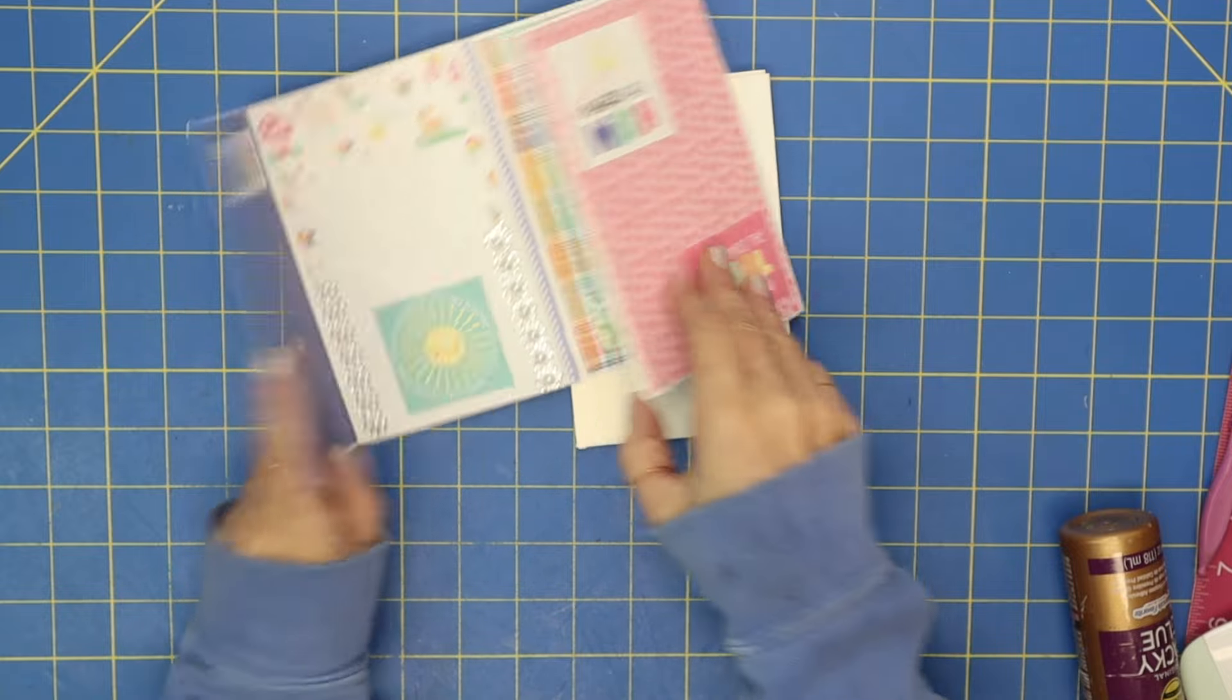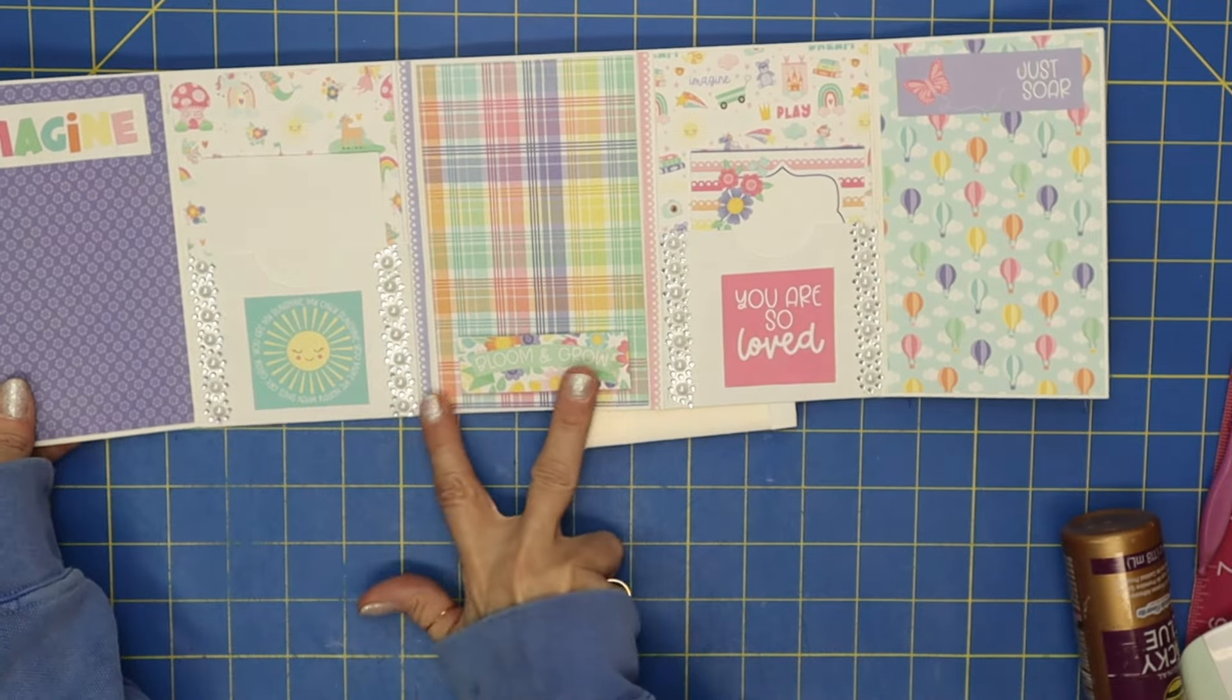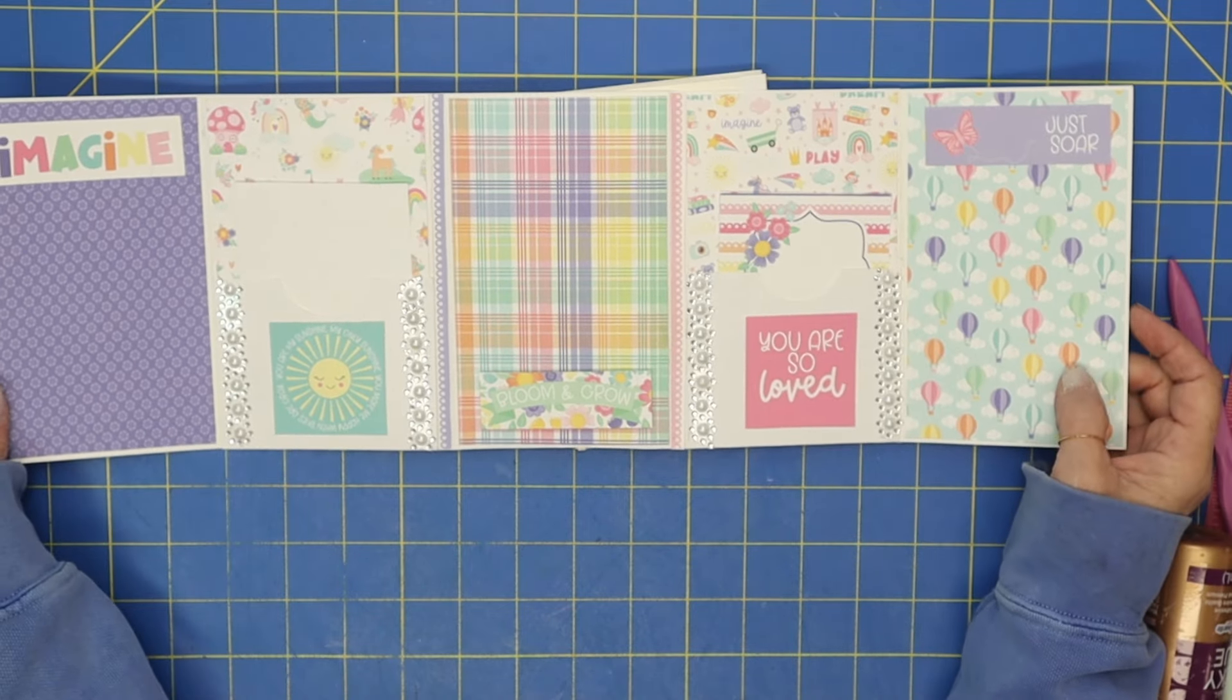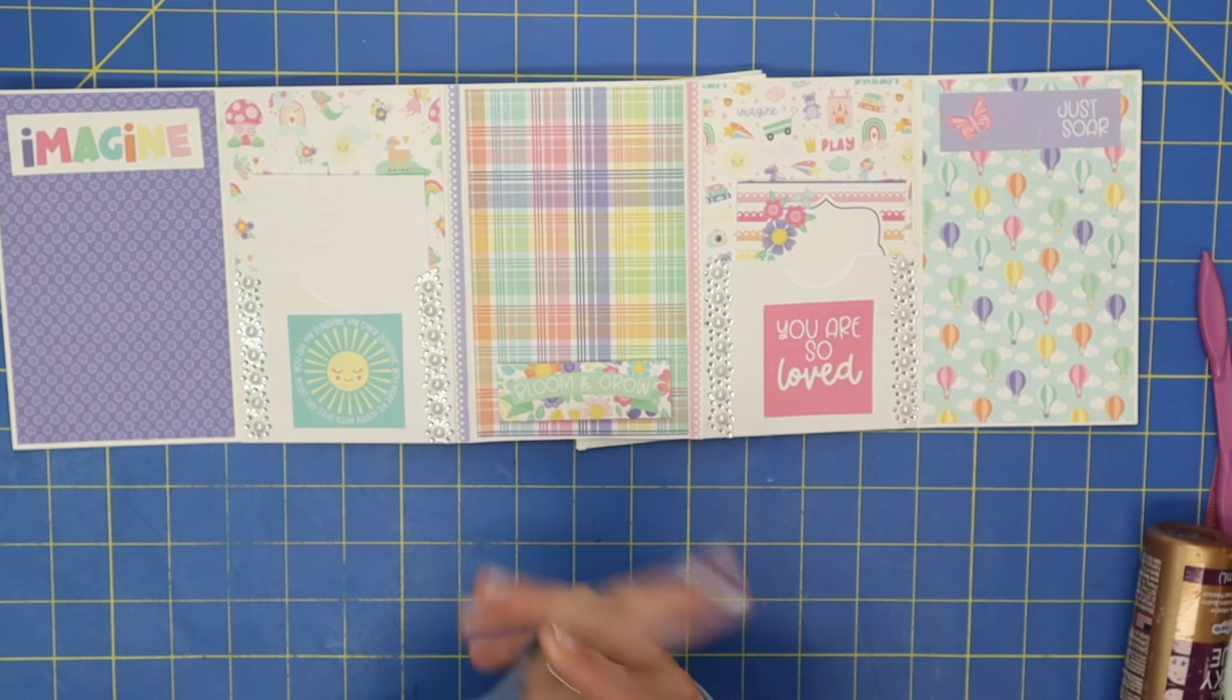And let me show you—I just think it makes it a little bit more complete. So there is my spine and there is my spine, and I also did that on the inside here, right here and right here. Just think it kind of ties the whole thing in. Isn't that just so cute?